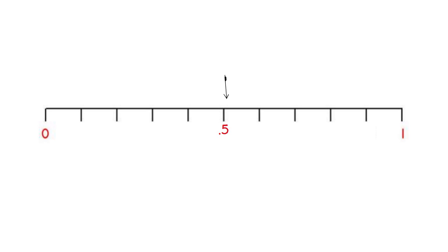Since the dashes have been given to us, there are 9 dashes between 0 and 1. So 0.5 is located here, right here in the middle. I counted the number of dashes and 5 is in the middle.